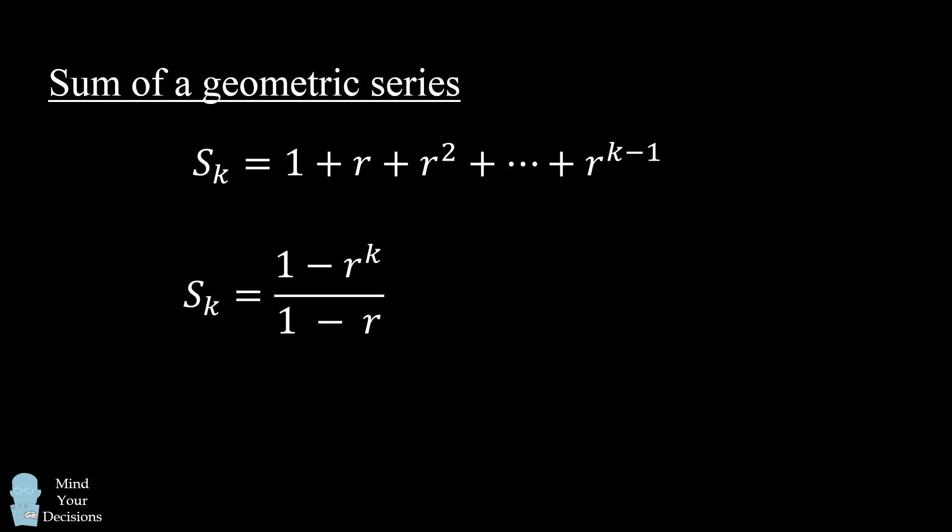Sometimes it'll be convenient to multiply the numerator and denominator by negative 1, and that's the formula I used in this video, which is r to the power of k minus 1 all over r minus 1.